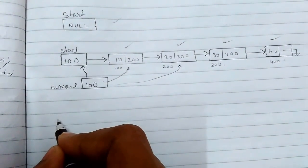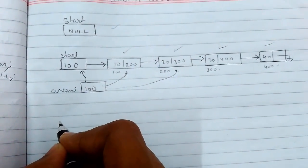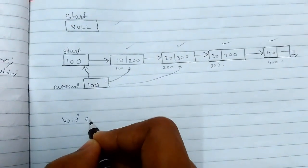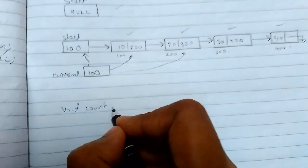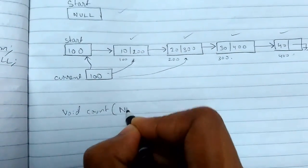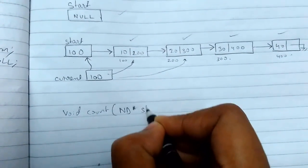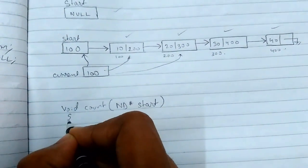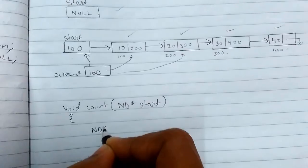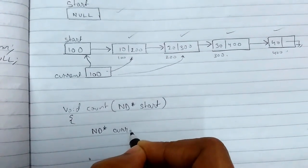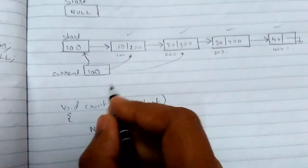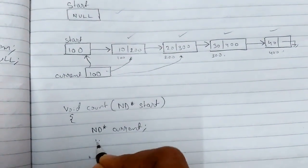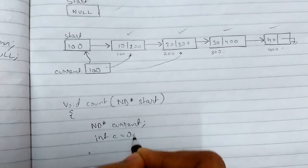The function is written like this: void count, taking a node pointer start. We take a current pointer for moving, and an int c equals zero to keep the count. We initialize current equals to start.